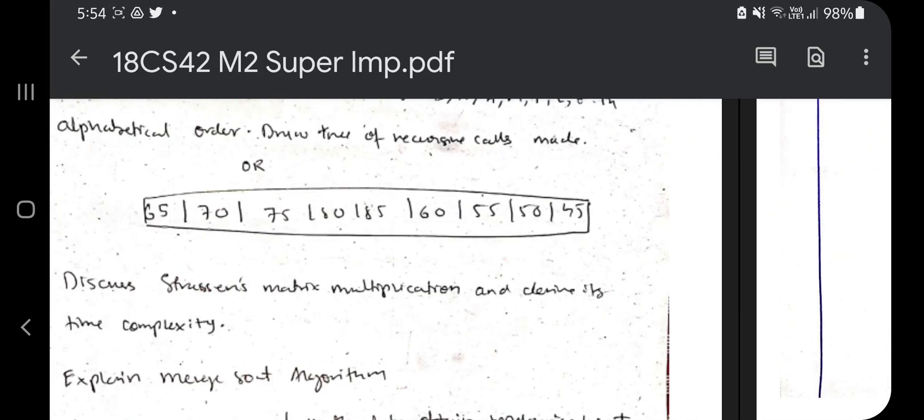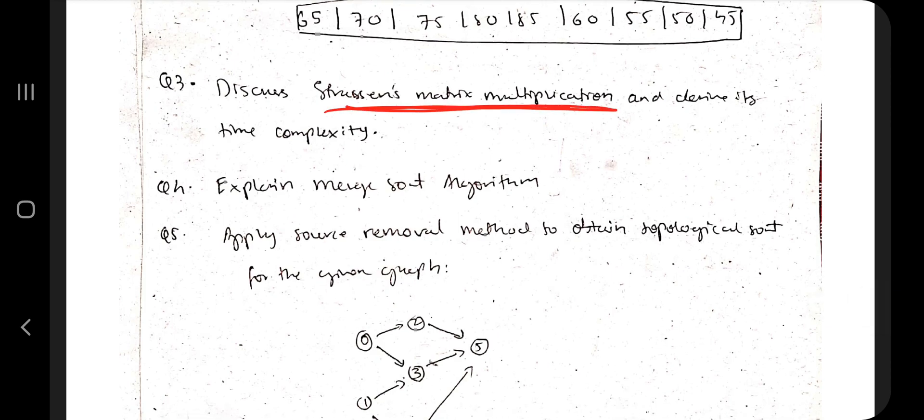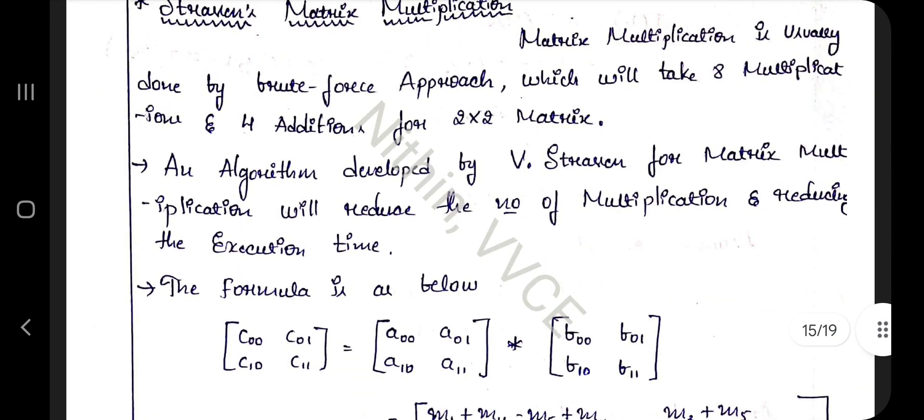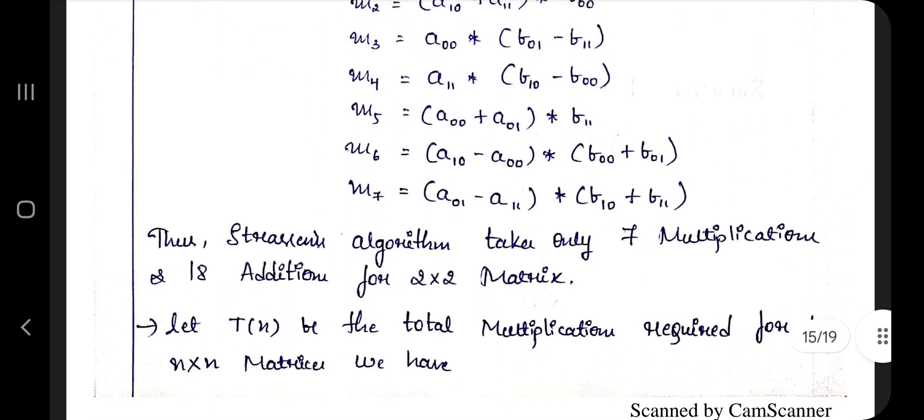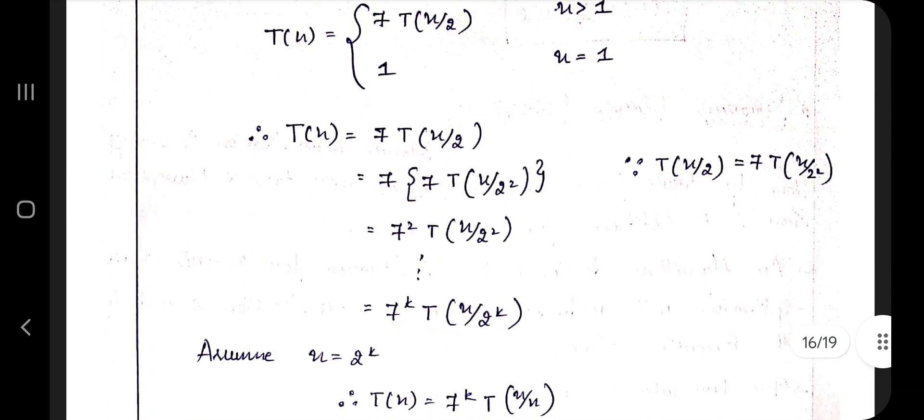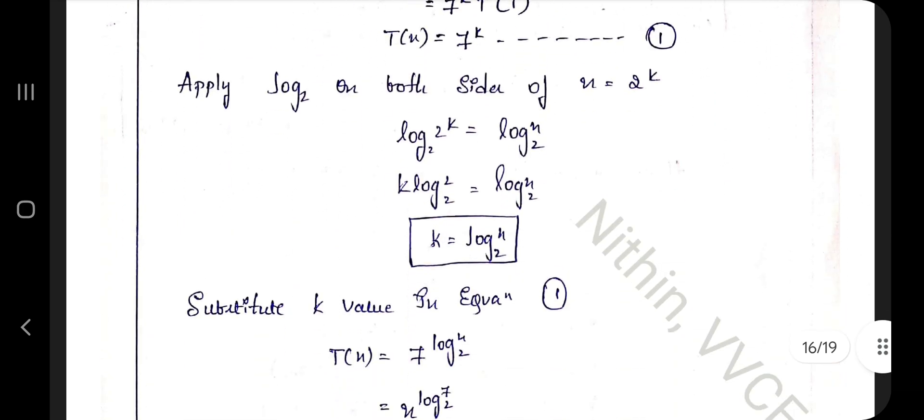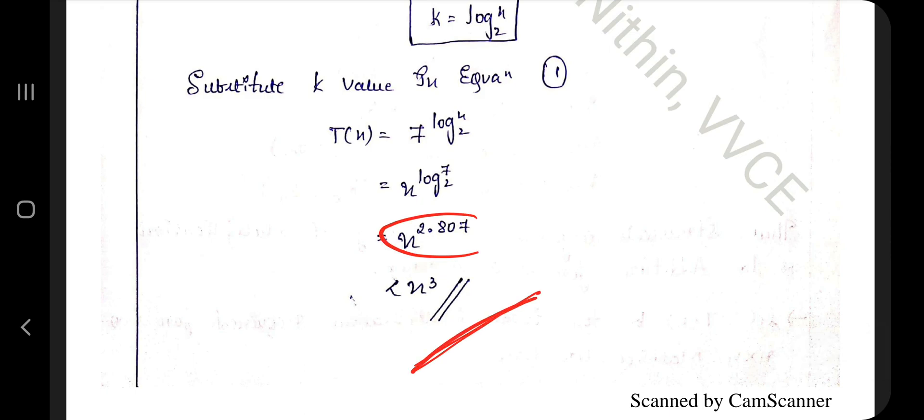The next one is: discuss Strassen's matrix multiplication and derive its time complexity. This is a very important question. Strassen's matrix multiplication can be found on page number 15. There is theory and the formula - I have discussed in depth in my video. Make your basic concepts strong, it will be easy to attempt in the exam.